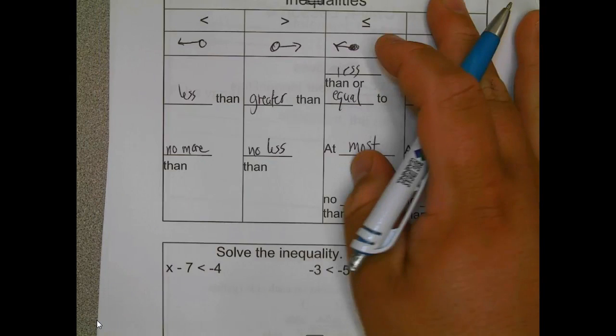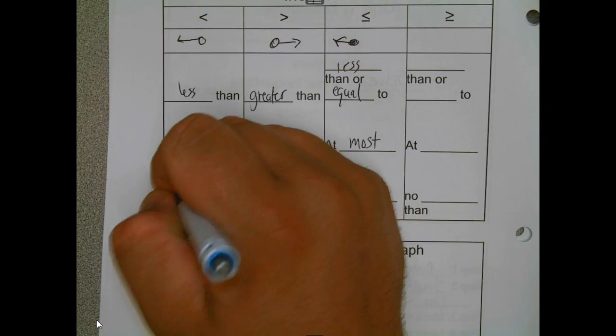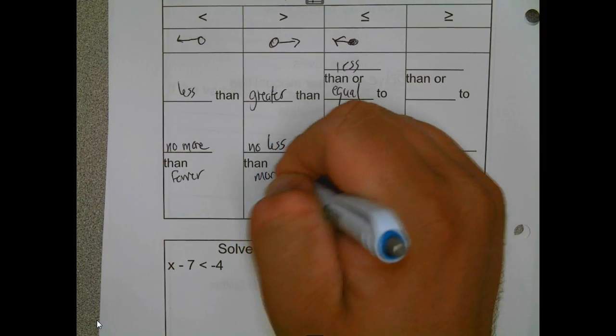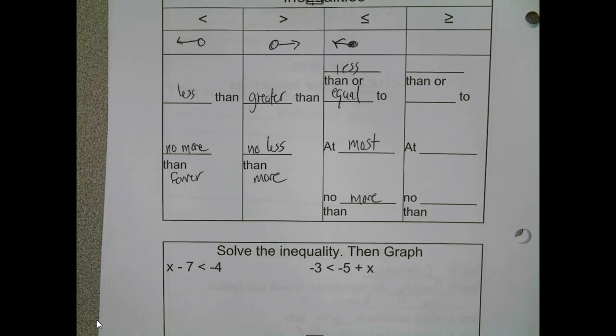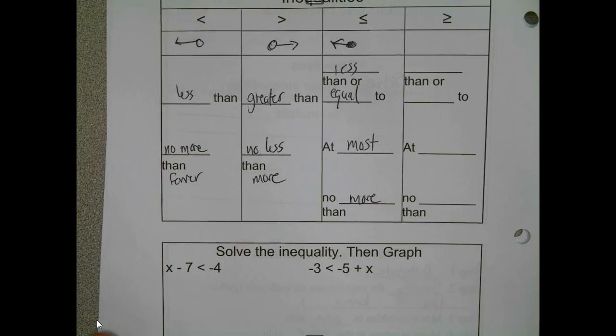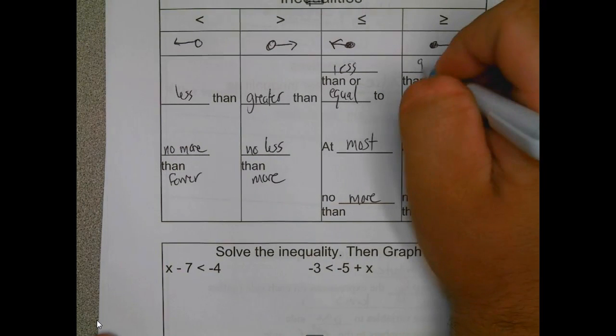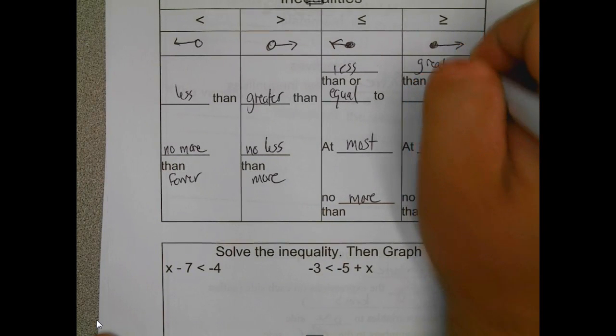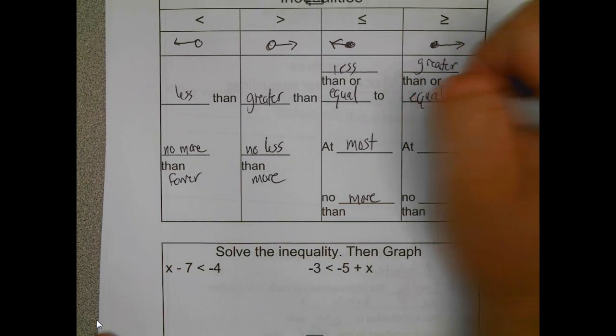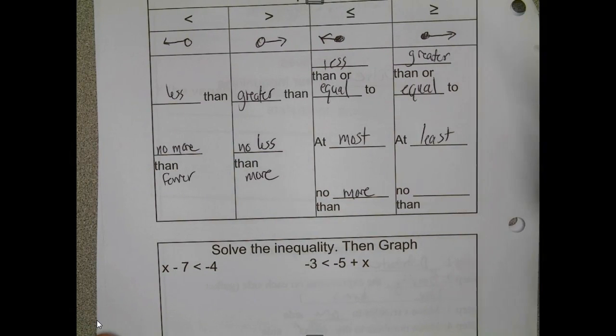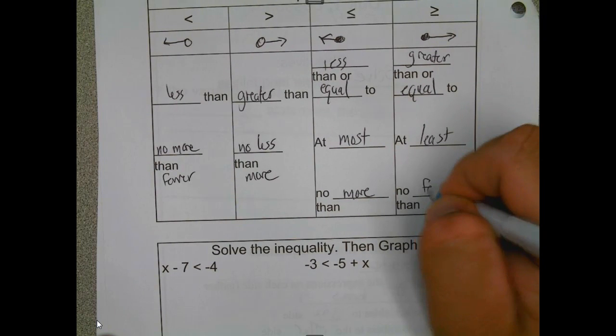Greater than or equal to is a closed circle shaded to the right. This one is at least and no fewer than.